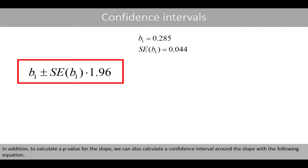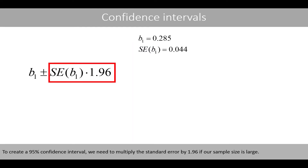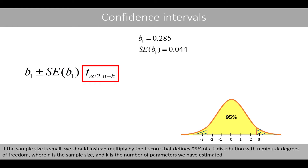In addition to calculating the p-value for the slope, we can also calculate a confidence interval around the slope with the following equation. The standard error can be interpreted as: we are about 68% sure that the true population parameter is within 0.285 plus or minus 0.044. To create a 95% confidence interval, we need to multiply the standard error by 1.96 if our sample size is large. If the sample size is small, we should instead multiply by the t-score that defines 95% of a t-distribution with n minus k degrees of freedom, where n is the sample size and k is the number of parameters we have estimated.